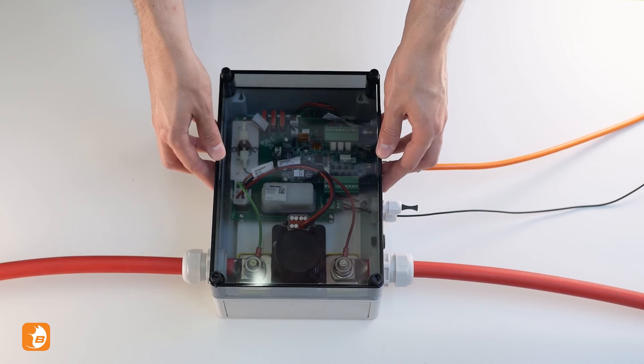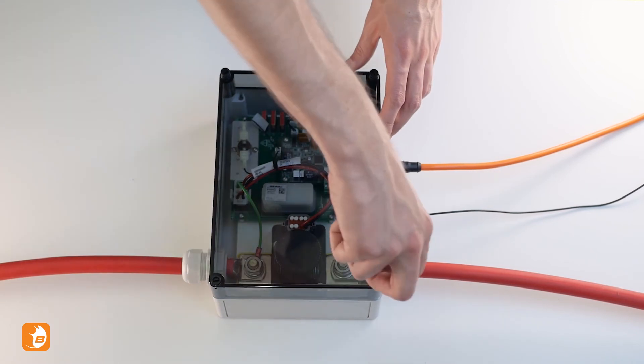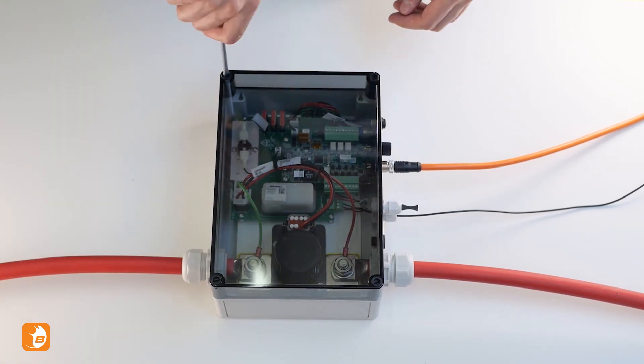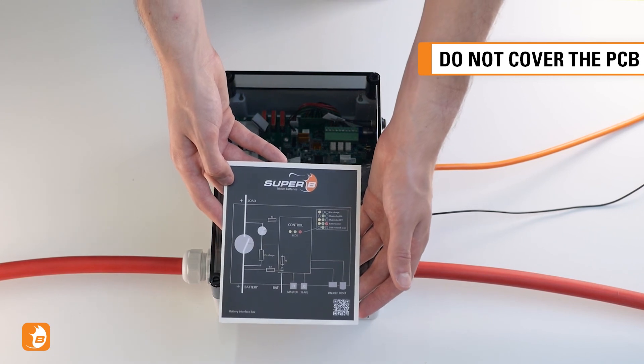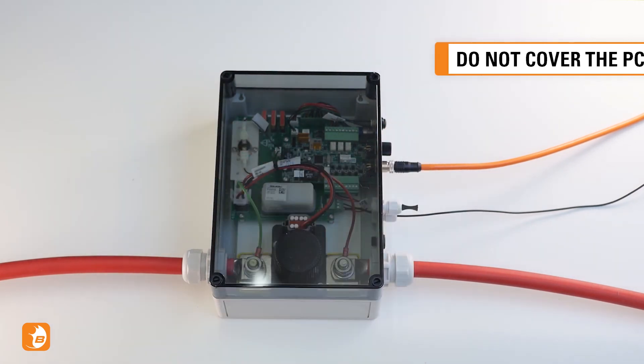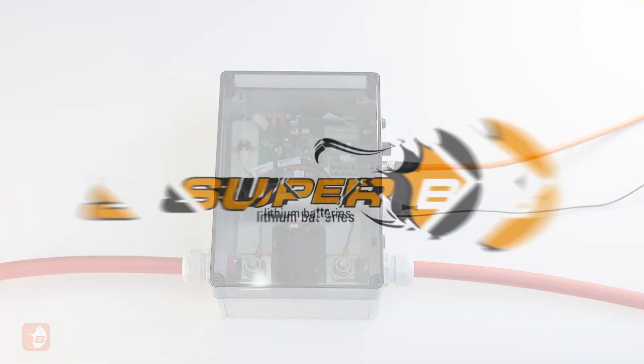Reinstall the top of the battery interface box. Place the included sticker somewhere in the vicinity of the battery interface box. Your battery interface box is now connected. Thanks for watching.